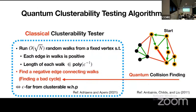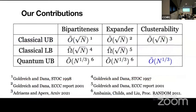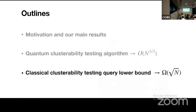The result is we get n-to-the-one-third query complexity, outperforming the classical one. For the second part, I would like to introduce the classical query lower bound.